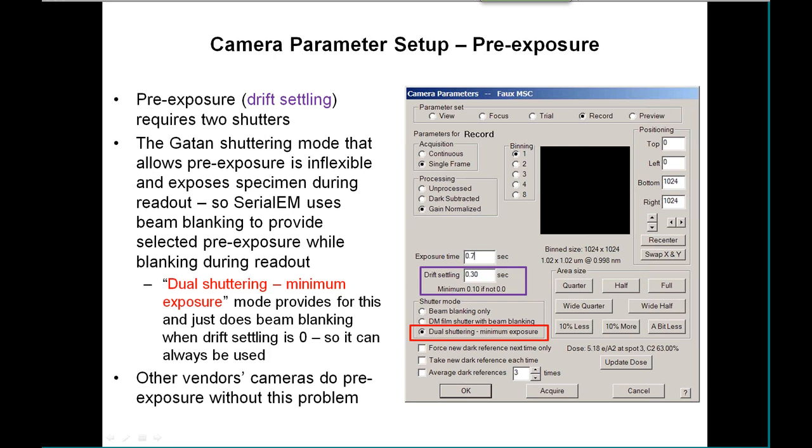Almost always, to do any kind of pre-exposure requires that you have two shutters: one shutter above the specimen that can open before the exposure itself and pre-expose the specimen, and then a shutter below the specimen that doesn't open until we're ready for the actual acquisition on the CCD.